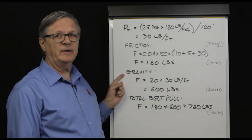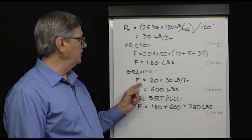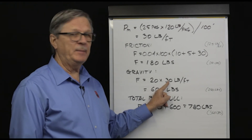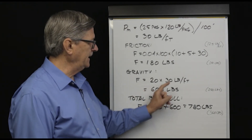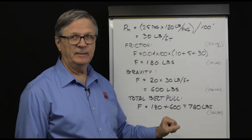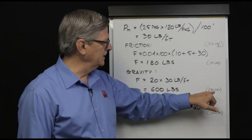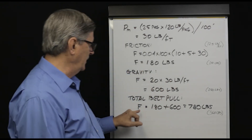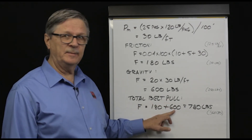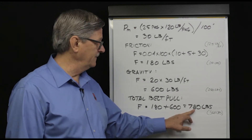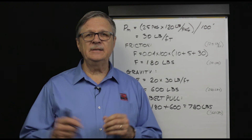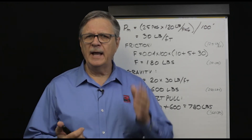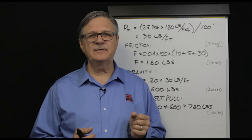Now let's check the belt pull required to overcome gravity. With 30 pounds per foot of product and 20 feet of elevation change: 20 times 30 equals 600 pounds — previously this was 250 pounds. So total belt pull is now 180 plus 600 equals 780 pounds, compared to 360 pounds before. From 8 a.m. to 10 a.m., the belt pull requirement is substantially higher. Let's convert this to required power and see if 1.5 horsepower is adequate.